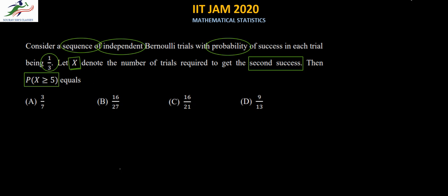Now the meaning of this question is that there are trials happening which are independent of each other, and we are asked to find that if we get the second success in the fifth trial or after the fifth trial, then what is the probability of that.